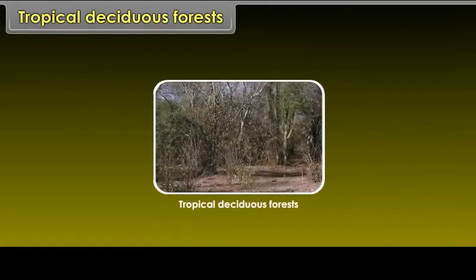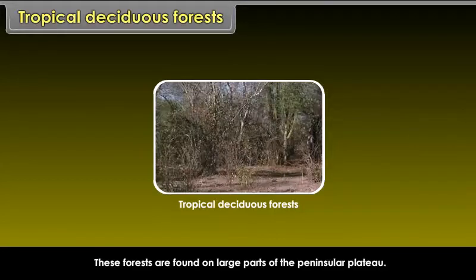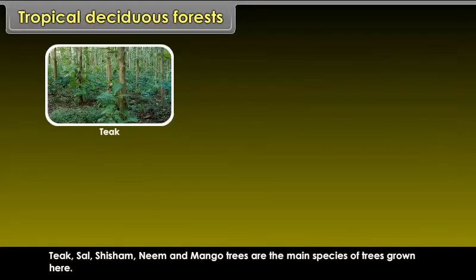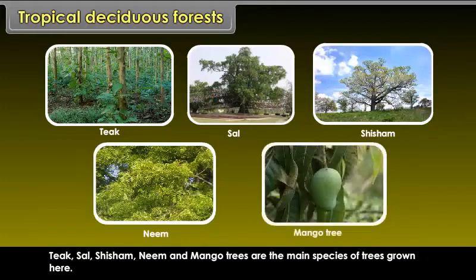Tropical deciduous forests are widely found across India. Teak, sal, shisham, neem, and mango trees are the main species of trees grown here.